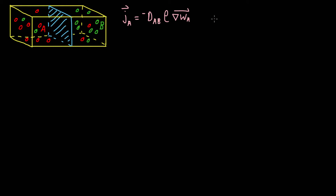We can do the same for species B. The flux of species B is given by negative the diffusion coefficient of species B in this mixture AB, multiplied by the density, and then multiplied by the mass fraction gradient of species B in the system.